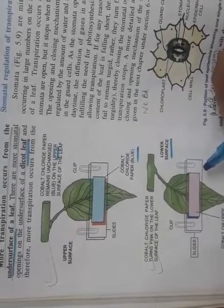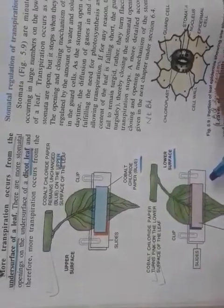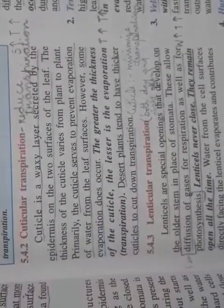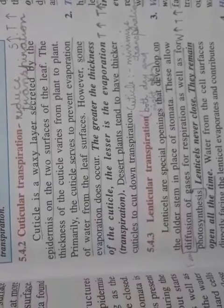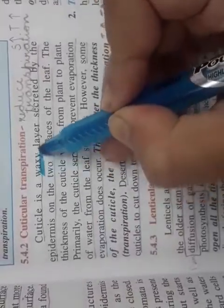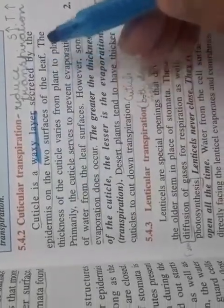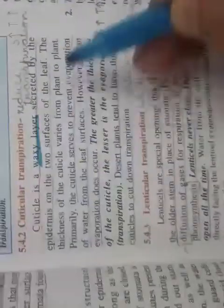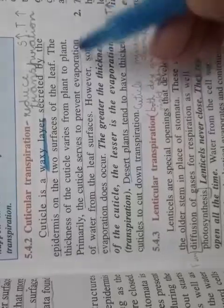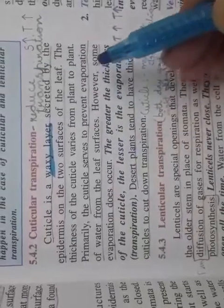This is because of the numerous stomata present on the lower surface. Now, cuticular transpiration: the cuticle is the waxy layer secreted by the epidermis on the two surfaces of the leaves. The thickness of the cuticle depends upon the plant. Cuticle serves to prevent evaporation of water from leaf surfaces. Desert plants have thicker cuticles to minimize transpiration.